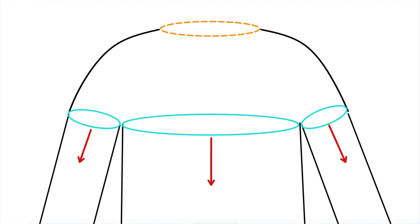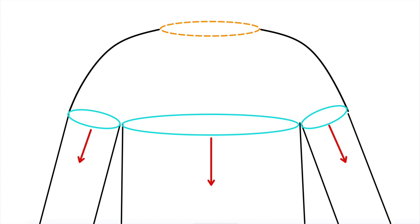That's how I calculate and knit my plain, simple yoke blouse or sweater. If you want to add a lacy pattern or cables to your yoke, that's a completely different beast and would require a different conversation.